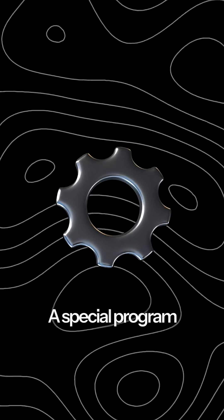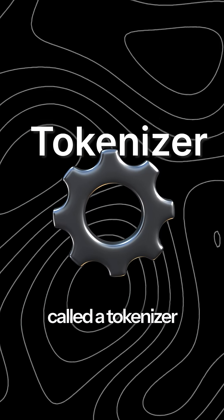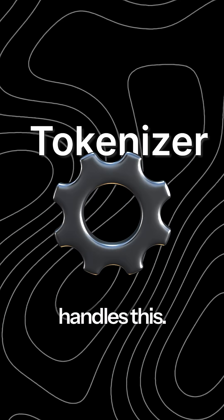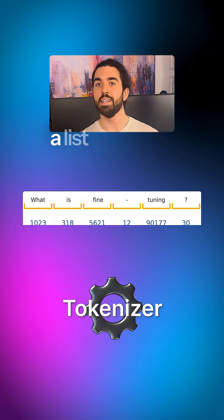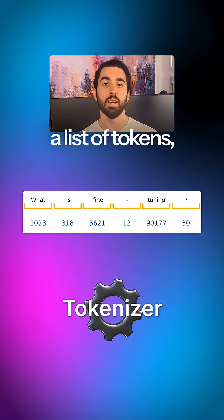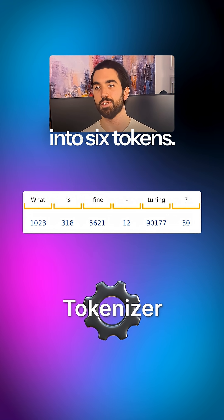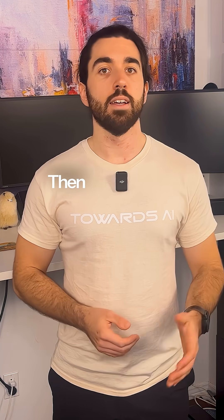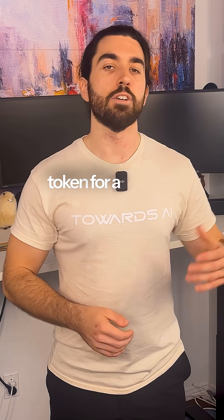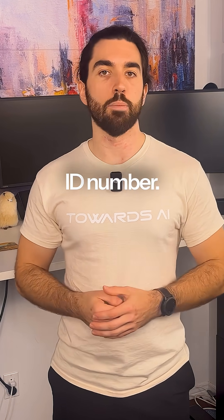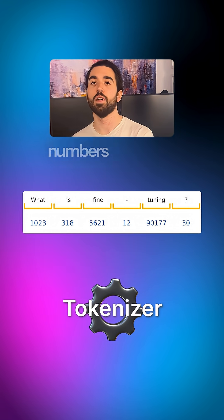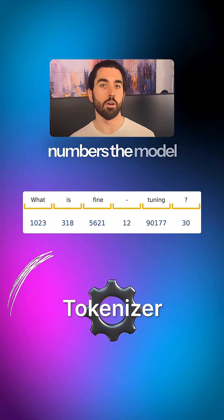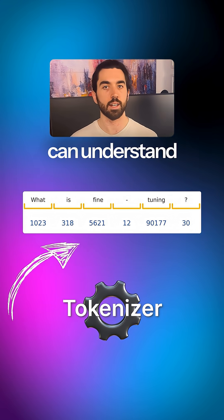A special program called a tokenizer handles this. For any question, it first splits the text into a list of tokens — like this one, into 6 tokens. Then, the tokenizer swaps each unique token for a specific ID number. The question finally becomes a sequence of numbers the model can understand like this.